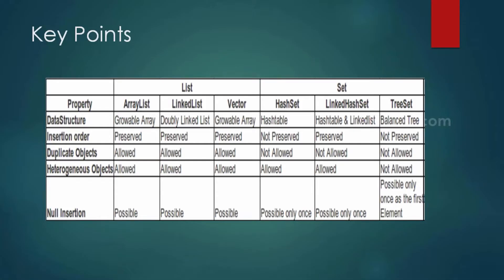Null insertion is possible for List implementation classes. For Set implementation classes it is also possible, but for TreeSet null is allowed only once and only as the first element. If a String is already inserted as the first element and then we insert null, String and null cannot be compared and therefore cannot be sorted, so TreeSet allows only one null and only as the first element.